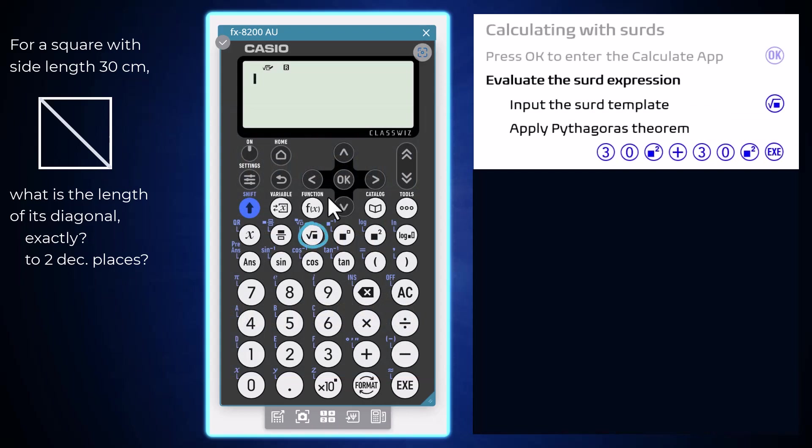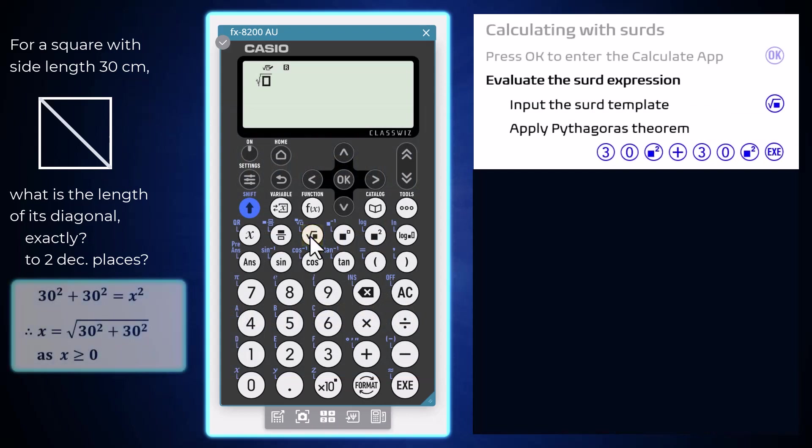Pressing the square root key, we can enter an expression for the length of the diagonal of a 30cm by 30cm square, thanks to good old Pythagoras' theorem.